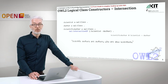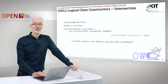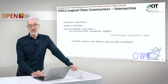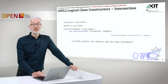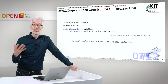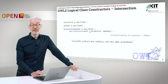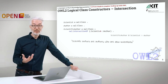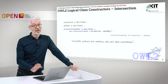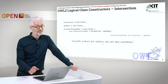Scientific authors are authors who also are scientists. I define Scientist as a class, Author as a class, and then ScientificAuthor as a class. I add OWL intersectionOf and then enumerate all the classes for the intersection using a collection — listing Scientist and Author. Scientific authors are authors who are also scientists. Simple as that.